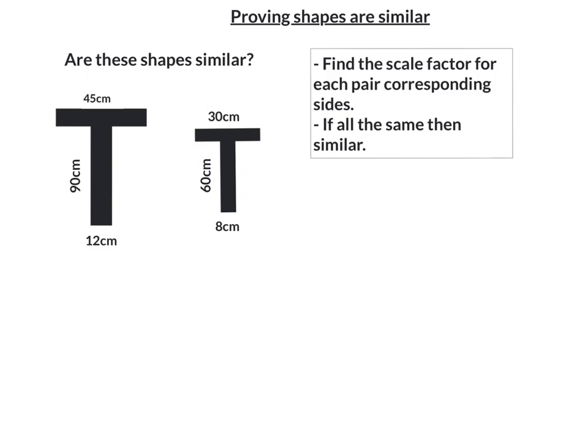So let's look at these T's. Corresponding sides - that side there corresponds with that one. So if we work out the scale factor of this one, we're going to do 45 over 30, and that's going to be 1.5. The next two is the height part here. So we're going to get 90 over 60 is equal to 1.5. Okay, so good so far. They've both got the same scale factor, 1.5.